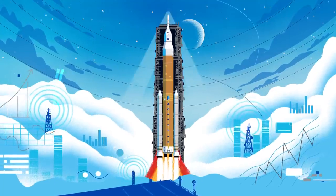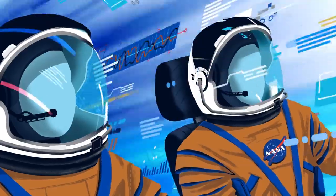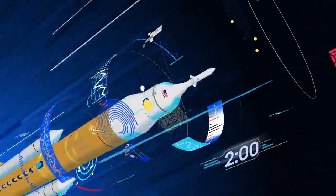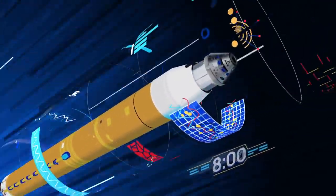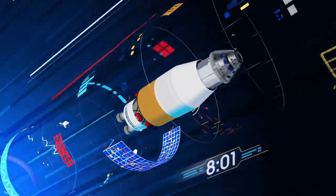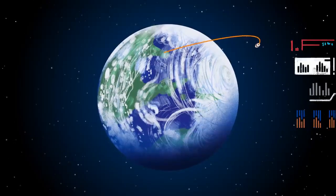All four RS-25 engines and the two solid rocket boosters come to life, thundering our crew upwards. Two minutes after ignition, the solid rocket boosters are spent and released. Eight minutes after launch, the core stage is depleted and separated. The upper stage fires briefly, placing Orion into a parking orbit around the Earth.